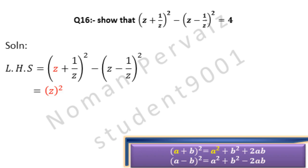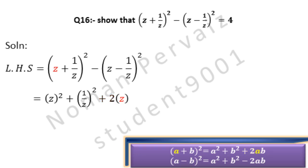Applying the first formula to (z + 1/z)², we write: a² is z², plus b² is (1/z)², plus 2ab where a is z and b is 1/z. Then minus, which comes as it is.